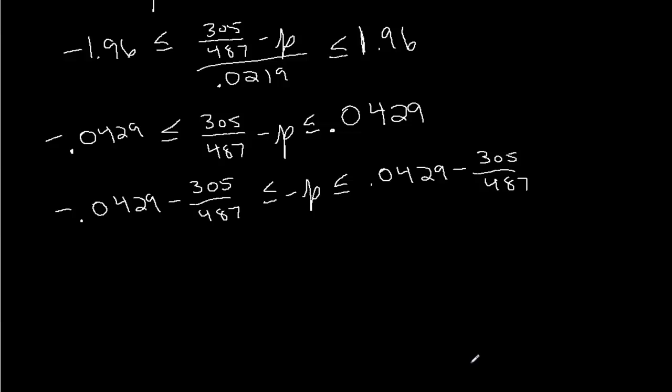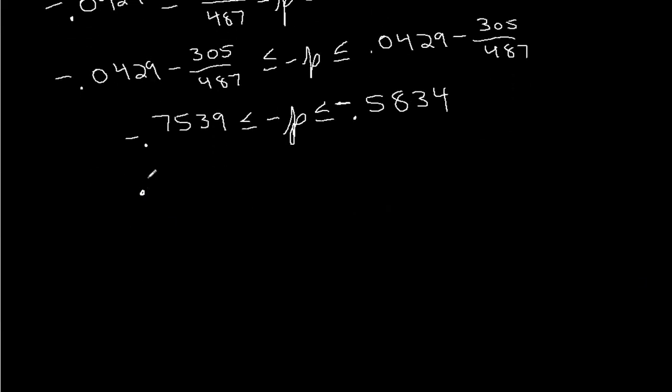And if you plug those into a calculator, you'll get that we have negative 0.7539 is less than or equal to negative p, which is less than or equal to negative 0.5834. Now I'm going to multiply through by negative 1, so that I have p and not minus p. Now when you multiply an inequality by negative, you have to switch the order of the inequality. So we have that p is between 0.5834 and 0.7539.